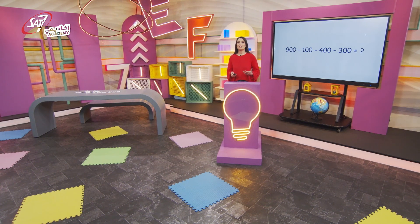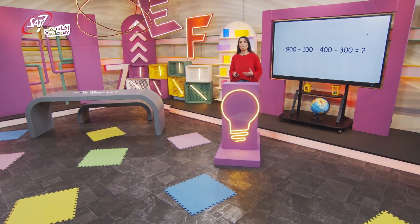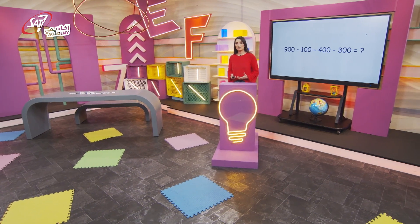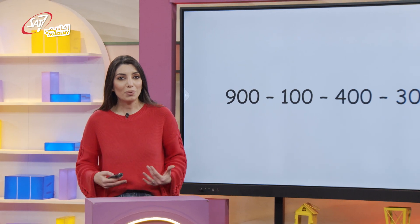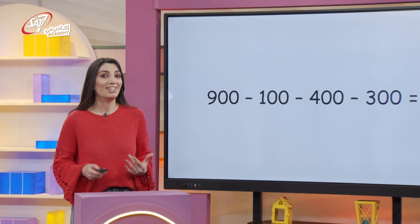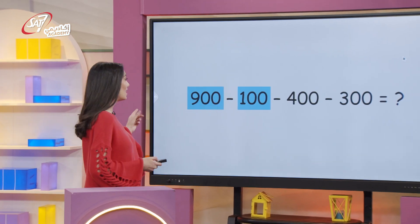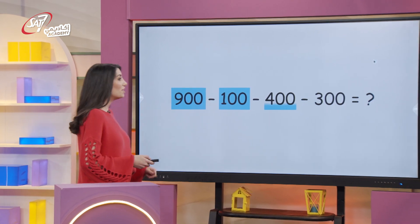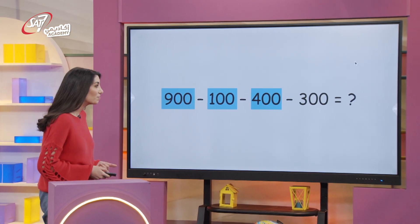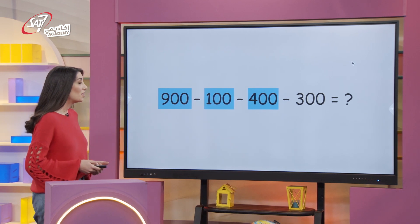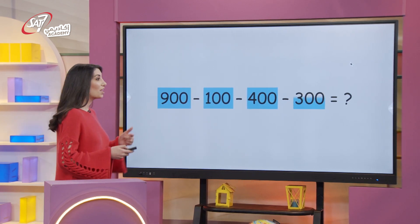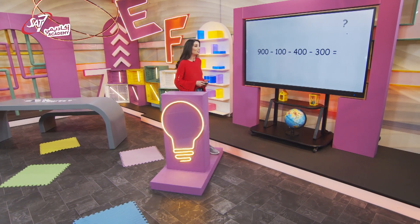Look at this subtraction sentence. All numbers are three digits, meaning they are in hundreds. To subtract, we will count backwards in hundreds. Nine hundred minus one hundred is eight hundred. Minus four hundred: seven hundred, six hundred, five hundred, four hundred. Minus three hundred: three hundred, two hundred, one hundred. The answer to this subtraction sentence is one hundred.